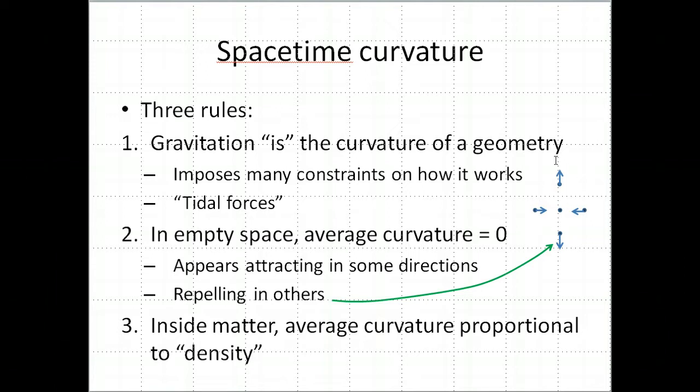So inside the Earth, you would actually see a very different picture. They would all be attracting to each other, or they'd all sort of go, the arrows would all go in, and you'd get a non-zero average curvature inside matter.